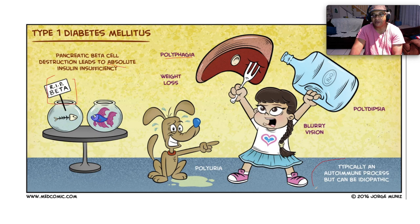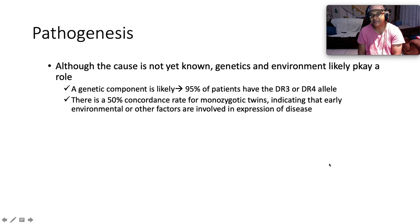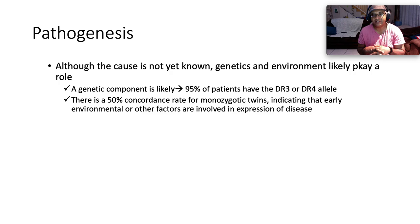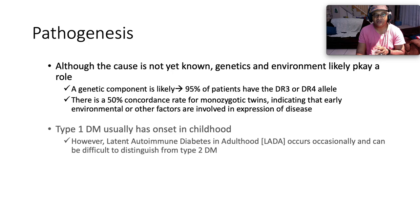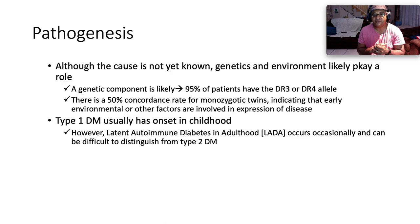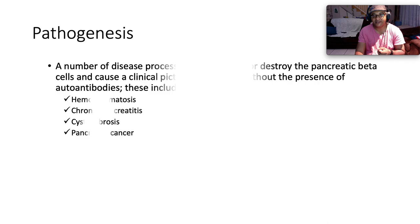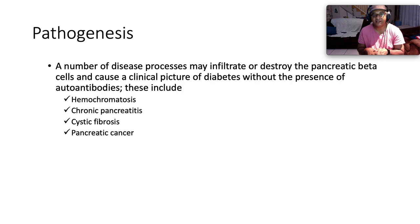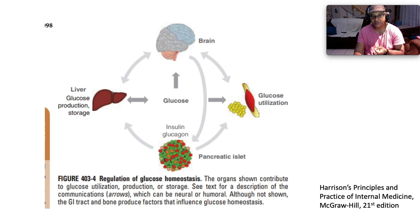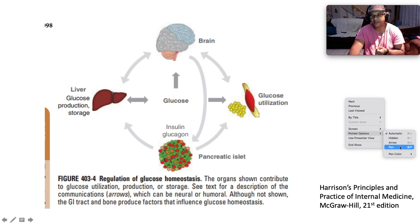Type 1 diabetes is typically an autoimmune process, though it may also be idiopathic. The exact cause is not yet known, but genetics and environment likely play a role. Ninety-five percent of patients with type 1 diabetes have the DR3 or DR4 allele. There is a 50% concordance rate for monozygotic twins, indicating early environmental or other factors are involved. Type 1 diabetes usually has onset in childhood, but LADA — latent autoimmune diabetes in adulthood — can occur and be difficult to distinguish from type 2 diabetes. Conditions such as hemochromatosis, pancreatitis, cystic fibrosis, and pancreatic cancer can also destroy beta cells without the presence of antibodies.